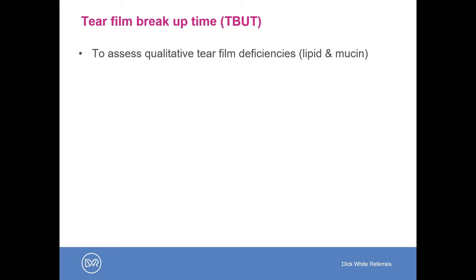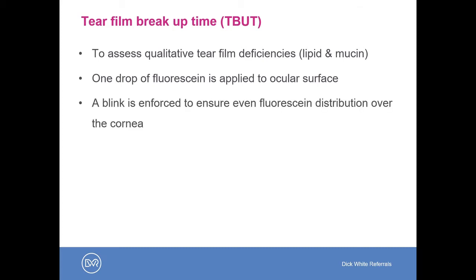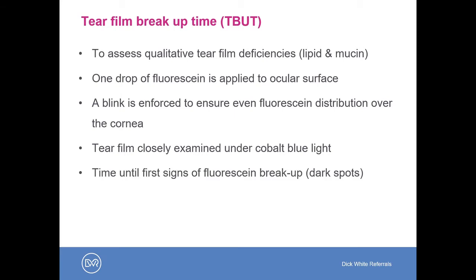The tear film breakup time is another application of fluorescein, and we use it to assess qualitative tear film deficiencies — where the lipid and mucin layers may be deficient. One drop of fluorescein is applied via our paper strip, then a blink is enforced to ensure even distribution over the cornea. We hold the eyelids open and examine the tear film under magnification, looking for dark spots to appear in the green fluorescein coating. We measure the time until these dark spots occur — normal breakup time should be at least 15 seconds up to around 25 seconds, and anything under 15 seconds would be suggestive of a qualitative tear film deficiency.